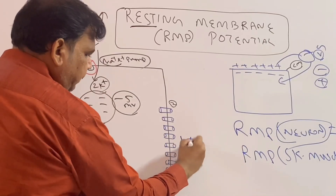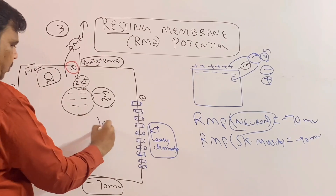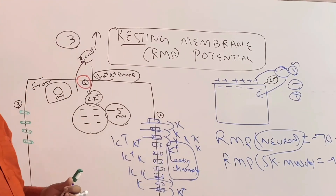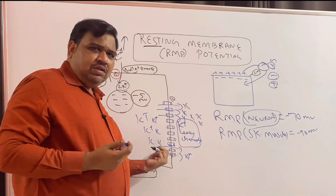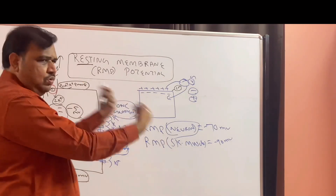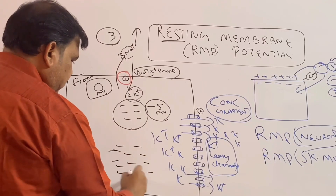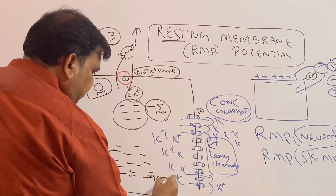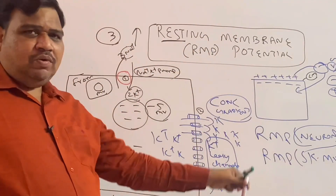Coming to the second cause: potassium leaky channels. As the name suggests, there is permeability for potassium. We all know potassium is more inside the cell — more potassium inside and less potassium outside. So potassium is coming outside; positive charge is going outside. More potassium moves from inside to outside the cell, along the concentration gradient. Because of this movement of potassium outside, there is again more negativity created — almost approximately minus 90 millivolt. Some say minus 94 also. So minus 90 millivolt is created because of the transport of potassium outside along the concentration gradient.